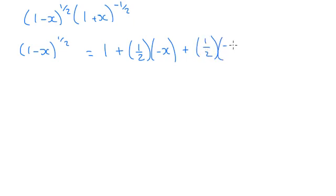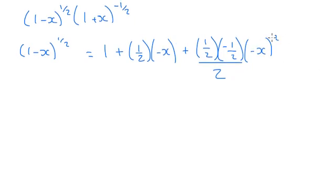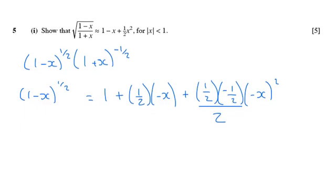So n times n minus 1, so that's going to be negative a half, times minus x squared, divided by 2 factorial, which is just 2. I only need to go up to the x squared term because this only went up to the x squared term.